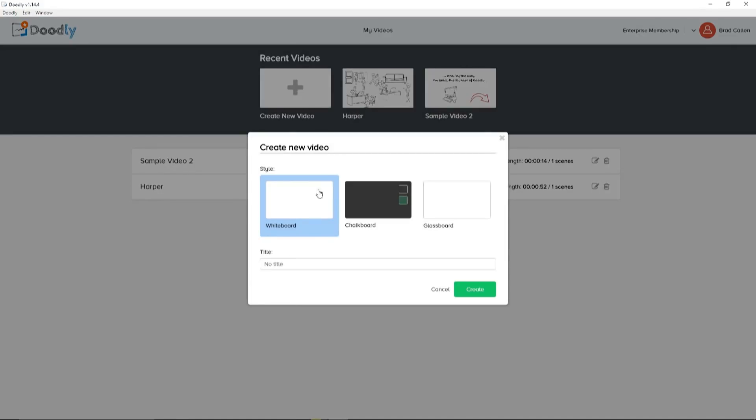You can choose from either whiteboard, blackboard, greenboard, or even glassboard videos, giving you lots of control over the style of video that you can create. In this example, we'll create a nice looking whiteboard video.